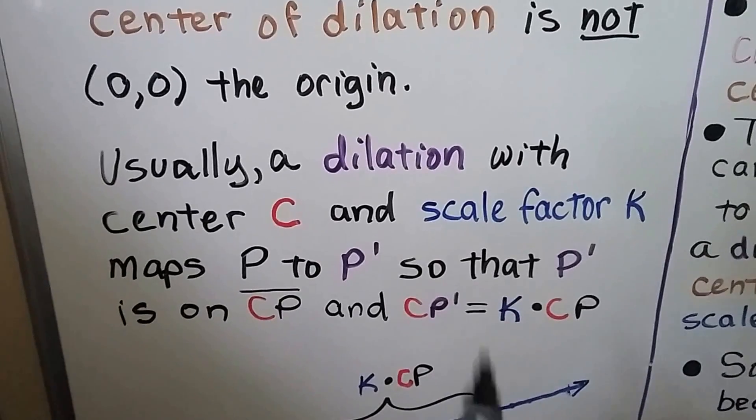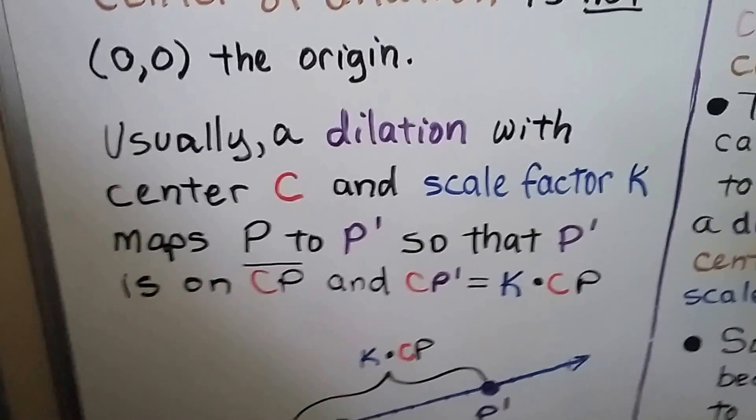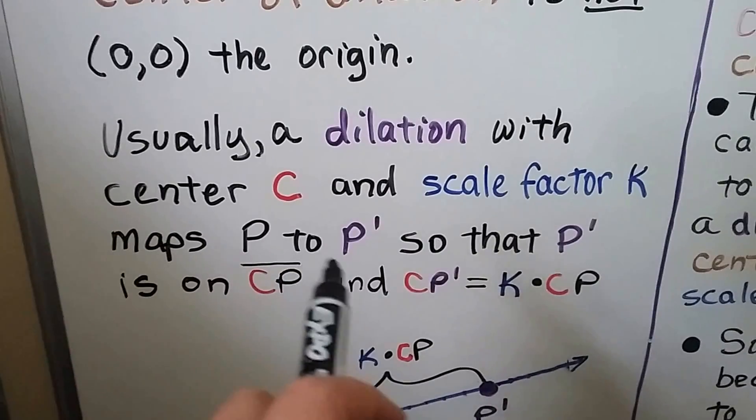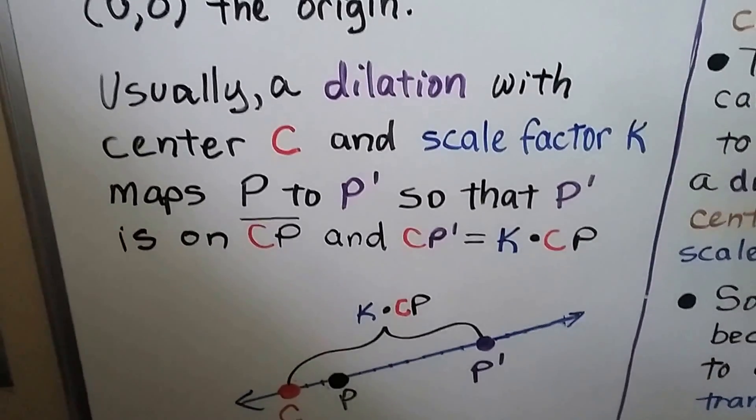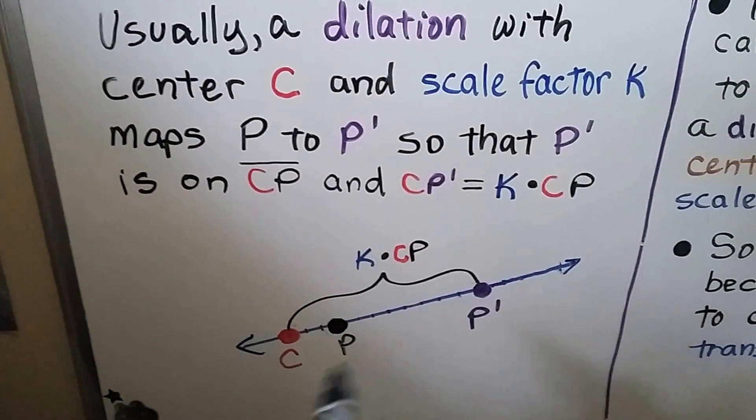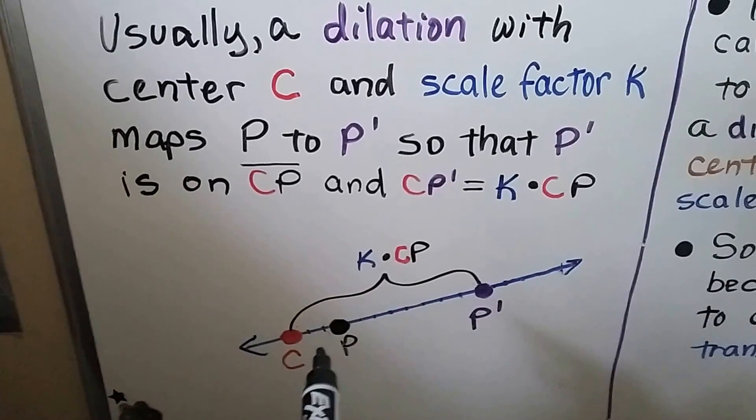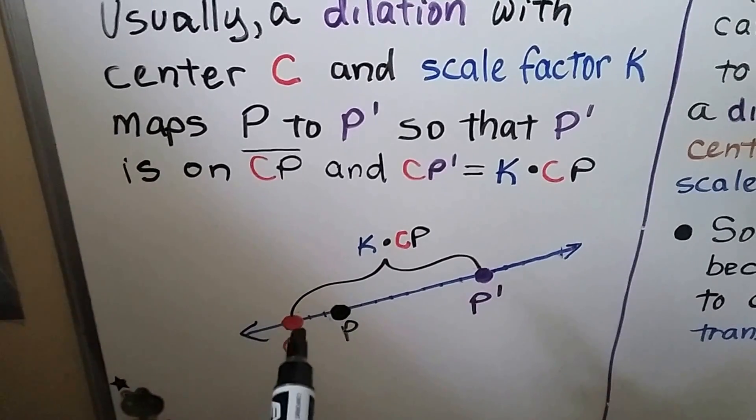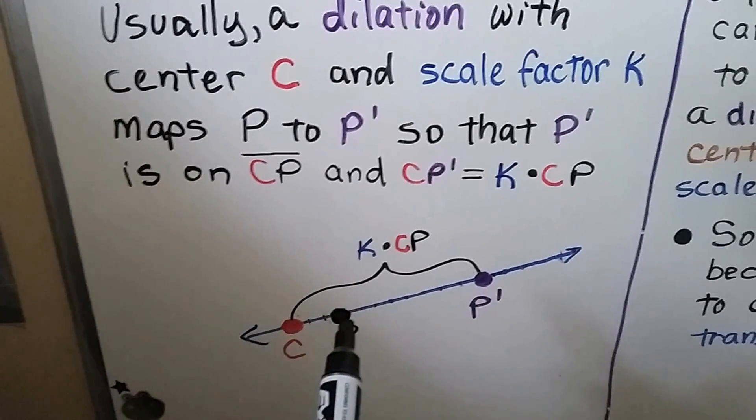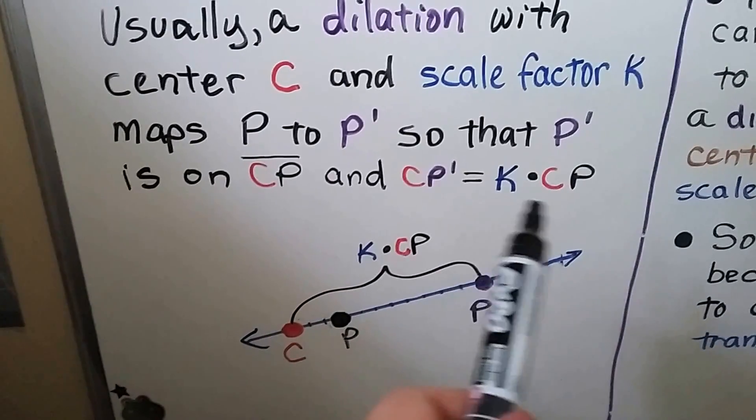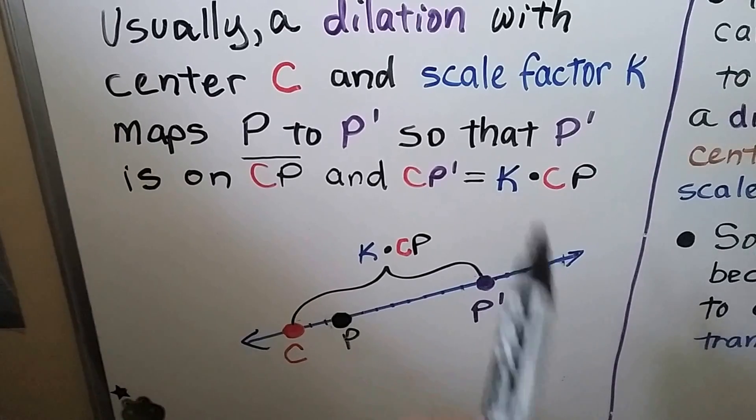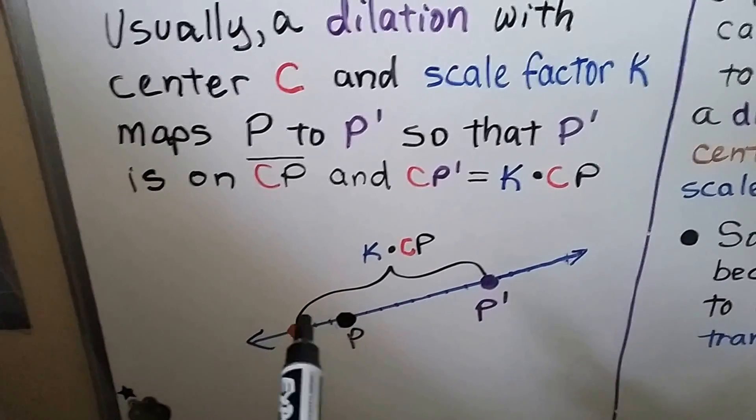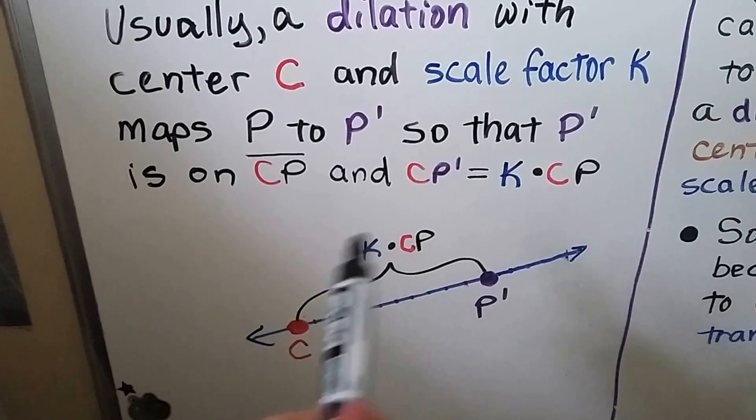And that would be our scale factor number, maps p, a point, to p prime. So that p prime is on segment cp, and cp prime is equal to k times cp. So if we have this point c and p, if we multiply it by the scale factor, it will equal cp prime.